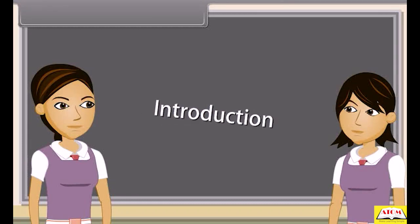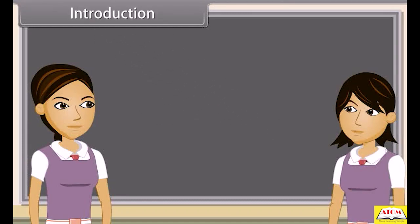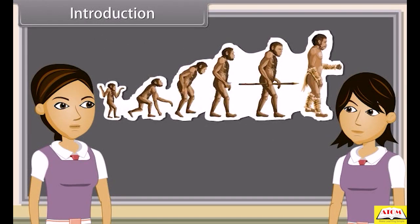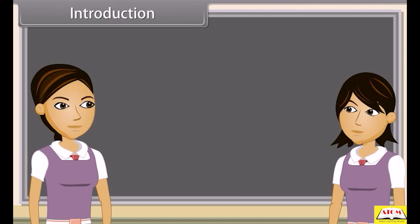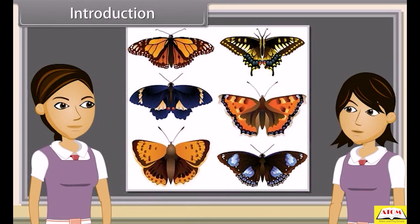Evolution is any change across successive generations in the heritable characteristics of biological populations. Variations are the structural, functional, or behavioral changes from the normal characters developed in living organisms.